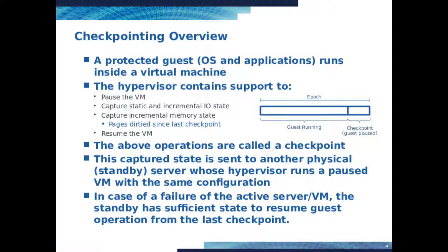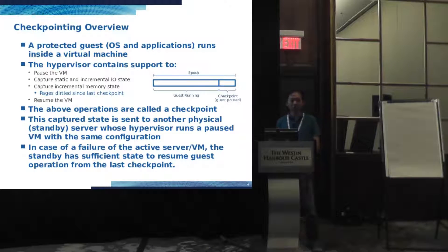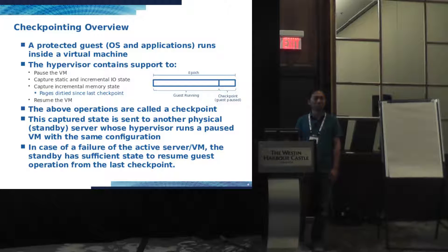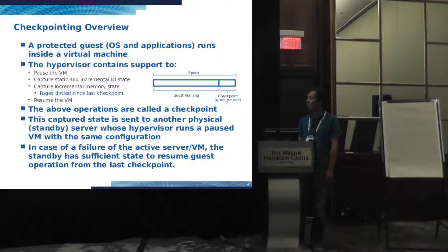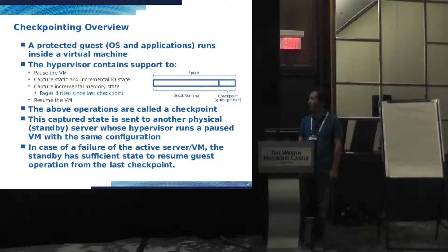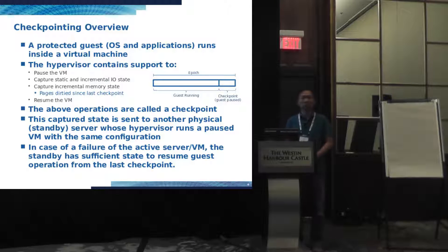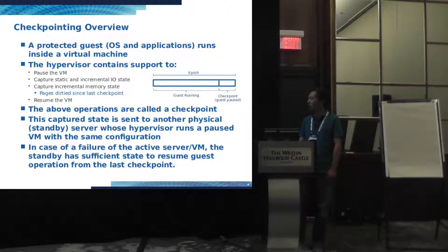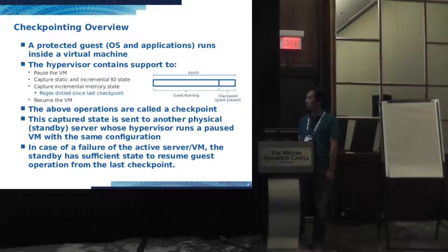In a traditional checkpointing solution, a protected guest runs inside a virtual machine. The user space can instruct the hypervisor to pause the VM periodically and capture the states — the CPU state, device state, and the memory state. Then it will send the captured state from the active side to the standby side. In the case of a failure of the active server, the standby side will have sufficient state to resume the guest operation from the last checkpoint.